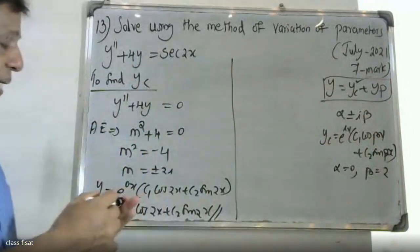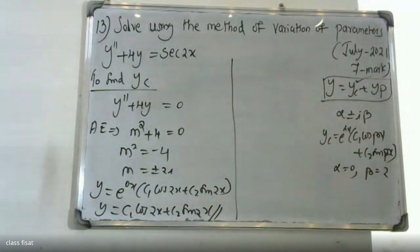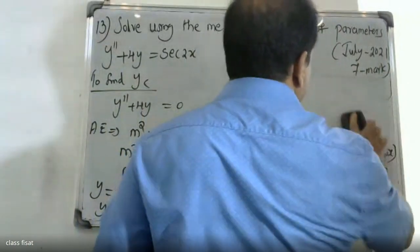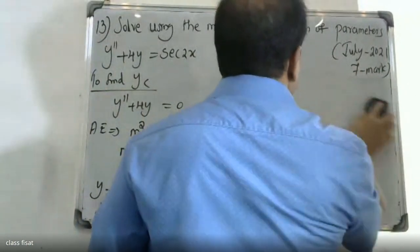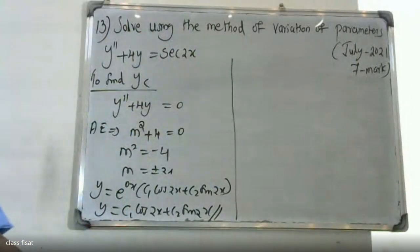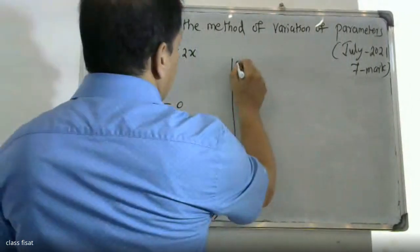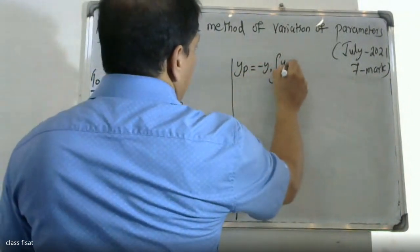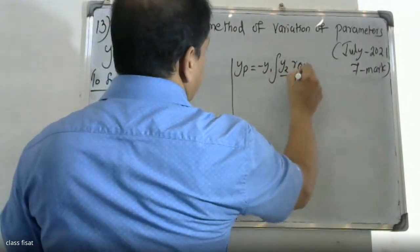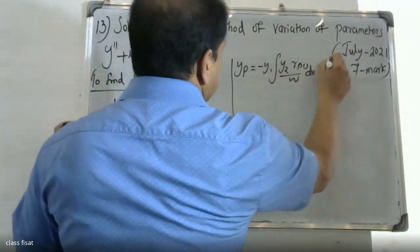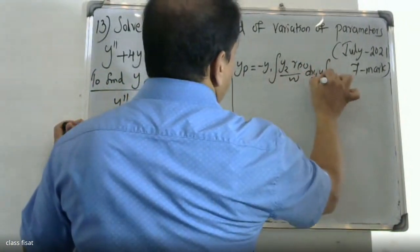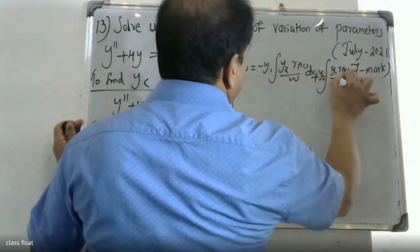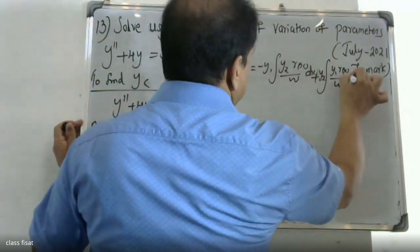Now for yp, the variation of parameters formula is: yp equals minus y1 integral of y2 r(x) divided by W dx, plus y2 integral of y1 r(x) divided by W dx.